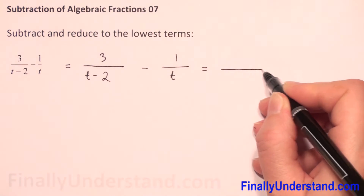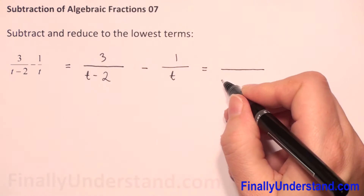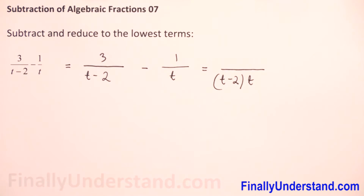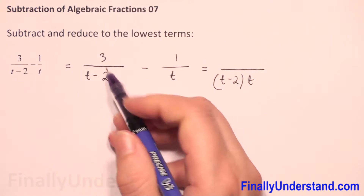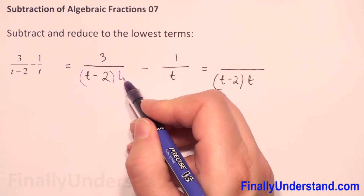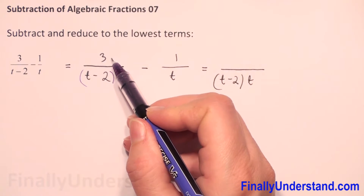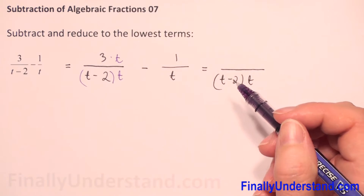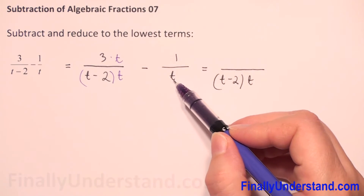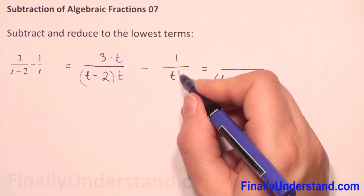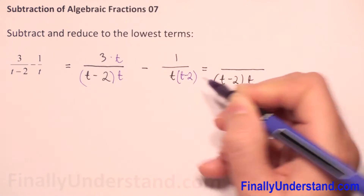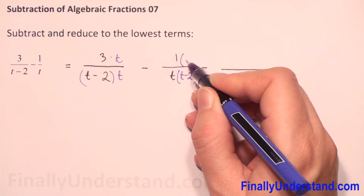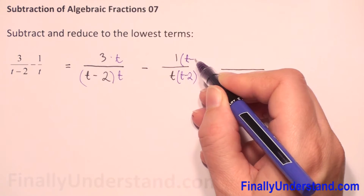We have to multiply these two denominators, so t minus 2 times t. Now when I multiply the first denominator by t, I have to do the same with the numerator — it means I have to multiply 3 times t. And the second numerator I multiply by t minus 2.